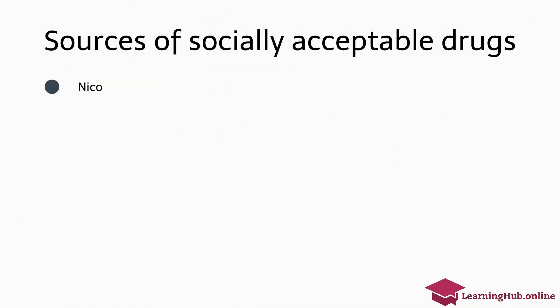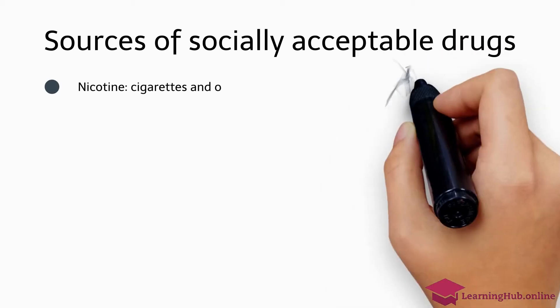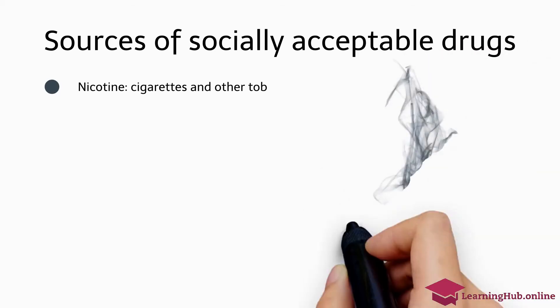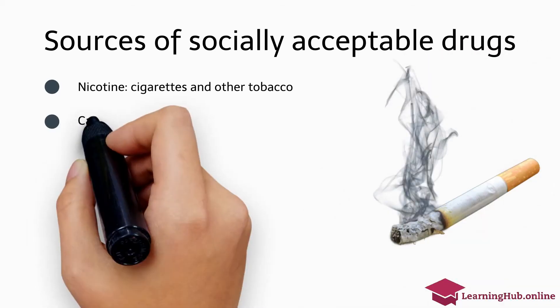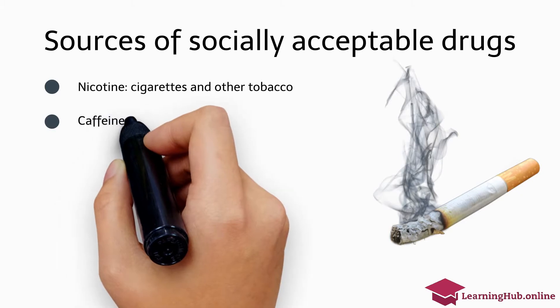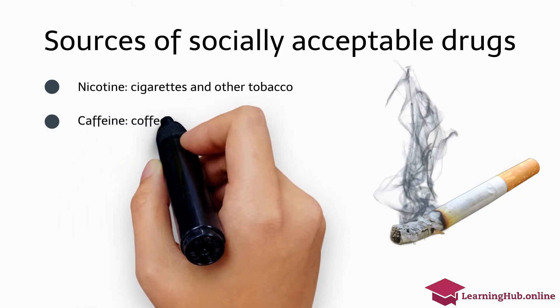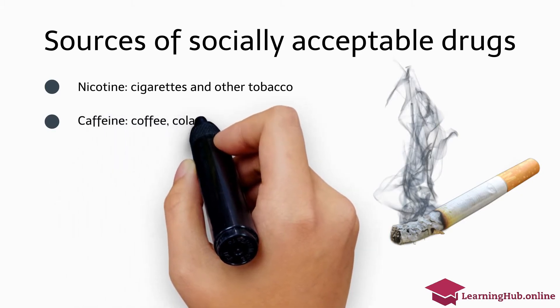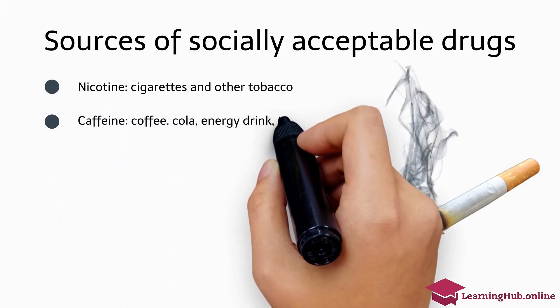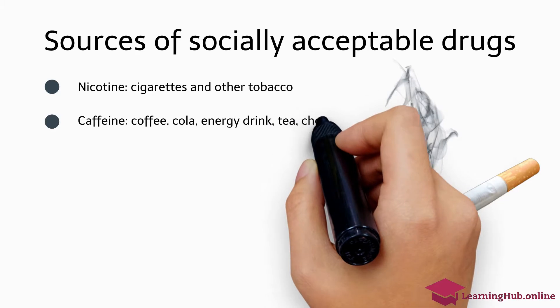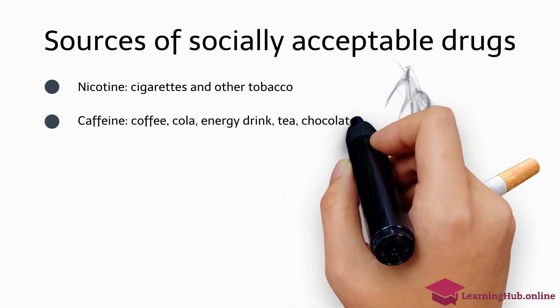Sources of socially acceptable drugs — nicotine: cigarettes and other tobacco. Caffeine: coffee, cola, energy drinks, tea, chocolate, etc.